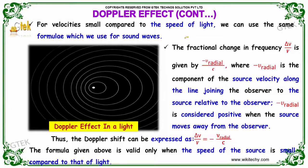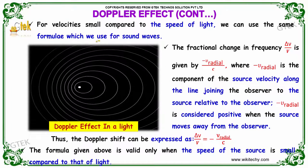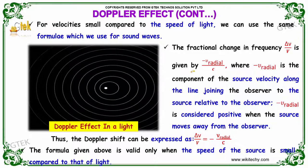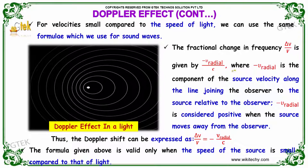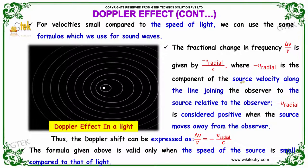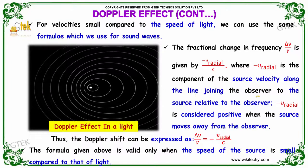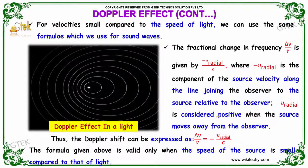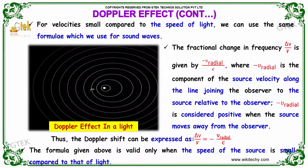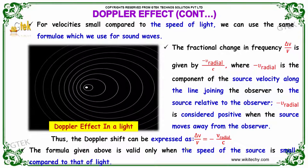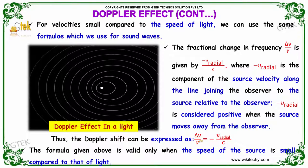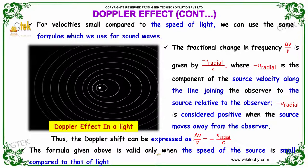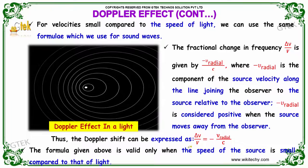For velocity small compared to the speed of light, we can use the same formula which we use for sound waves. The fractional change in frequency — delta V divided by V — is given by minus V radial divided by C, where minus V radial is the component of the source velocity along the line joining the observer to the source relative to the observer. Minus V radial is considered positive when the source moves away from the observer. Thus, the Doppler shift can be expressed as delta V divided by V equals minus V radial divided by C. This formula is valid only when the speed of the source is small compared to that of light.